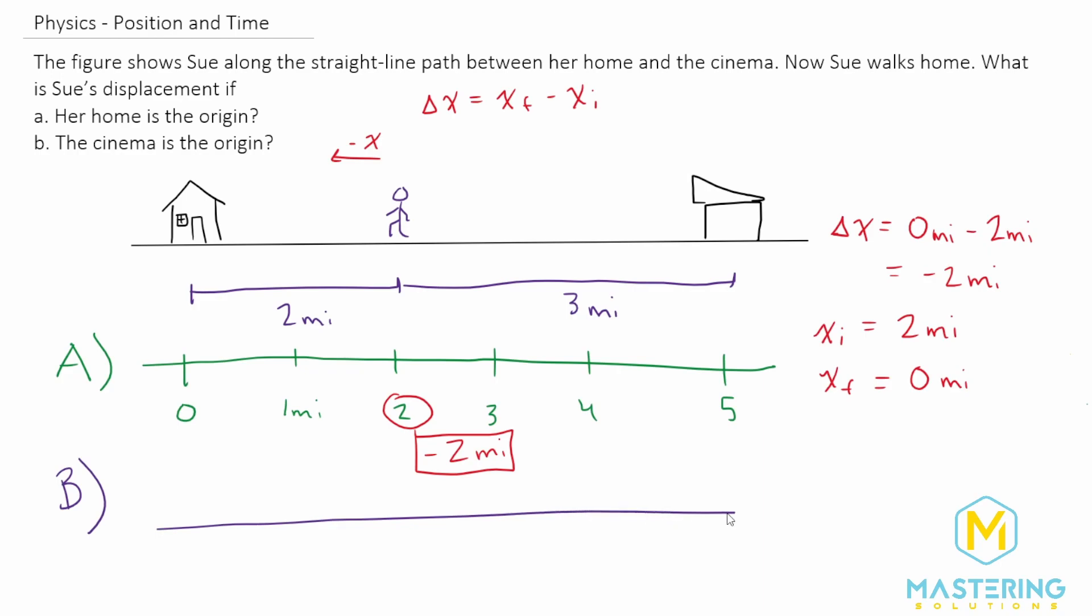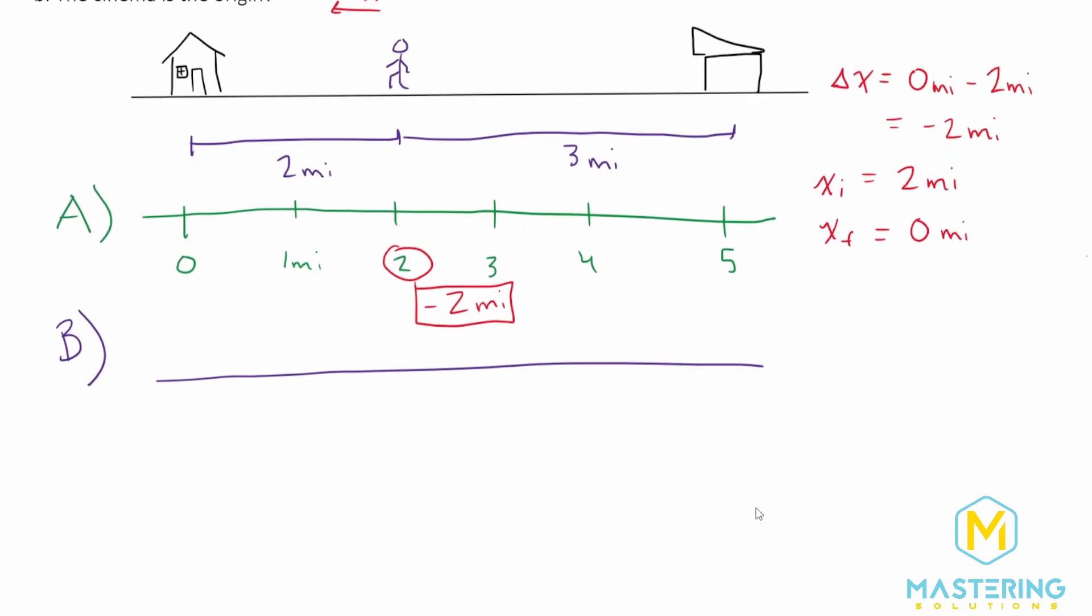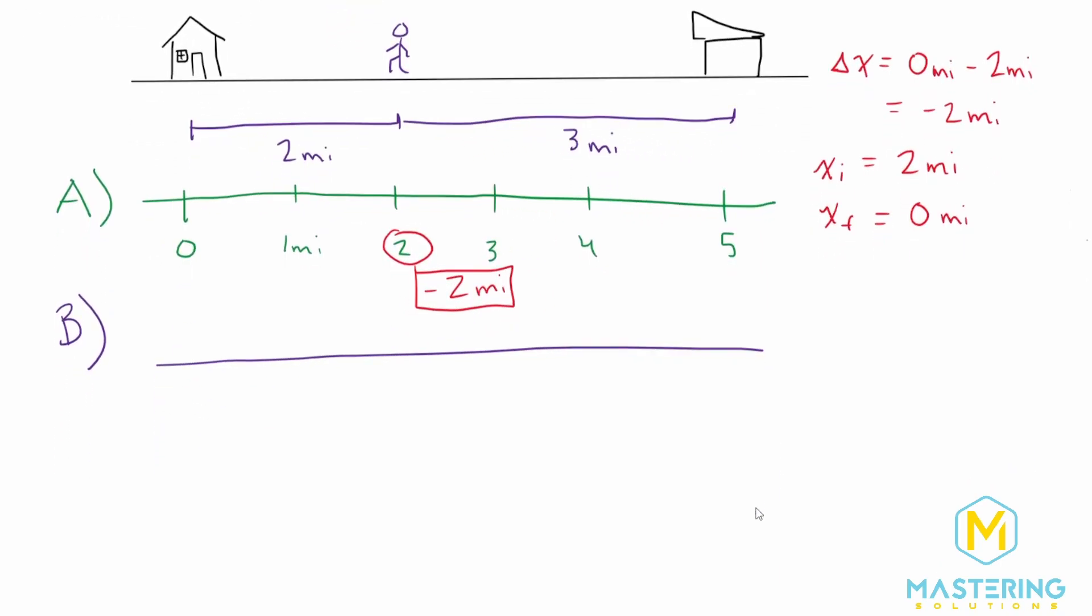And we're going to set another number line. Let's give us a little bit more room here. And we're going to say that the movie theater is now the origin. So here's two, three, four, and five.